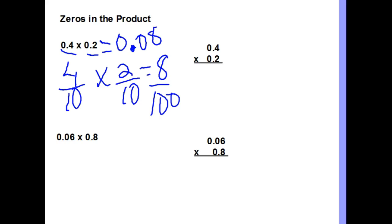Using the standard algorithm: 4 times 2 is 8. Then I look at how many decimal places I have — 1, 2 decimal places. So I need two decimal places in my answer. That gives me the same result as 8 hundredths, because two decimal places is the hundredths place.